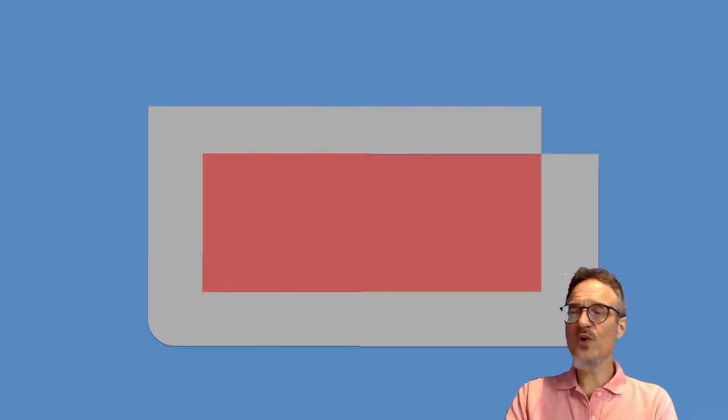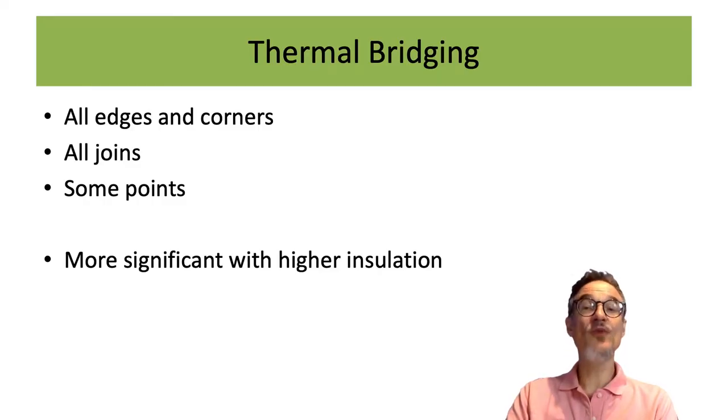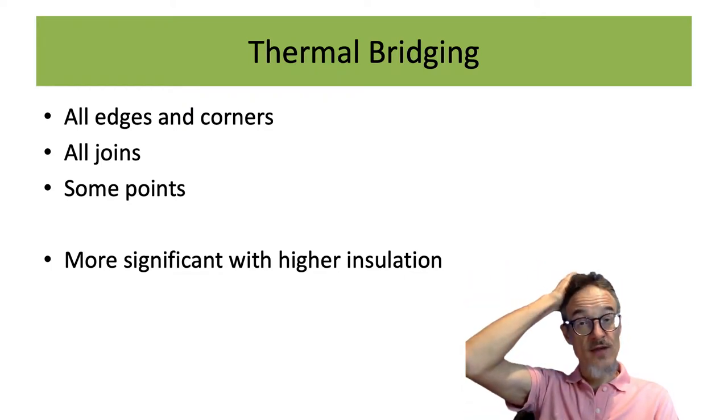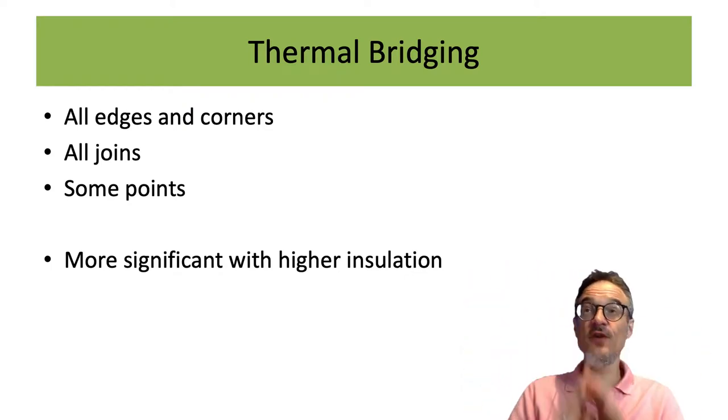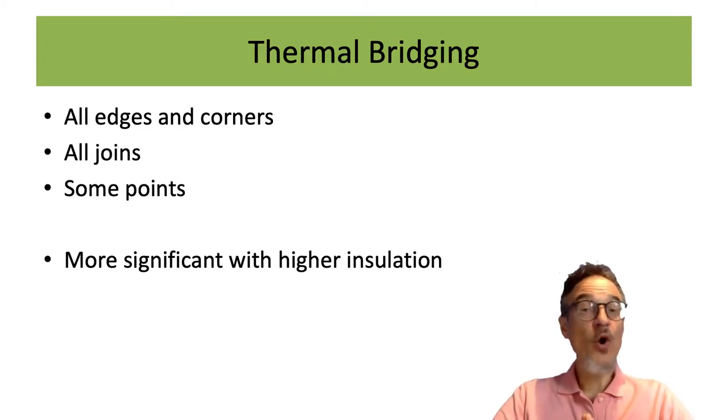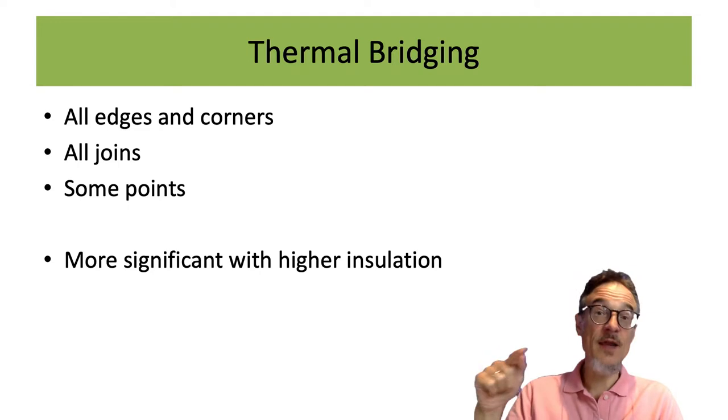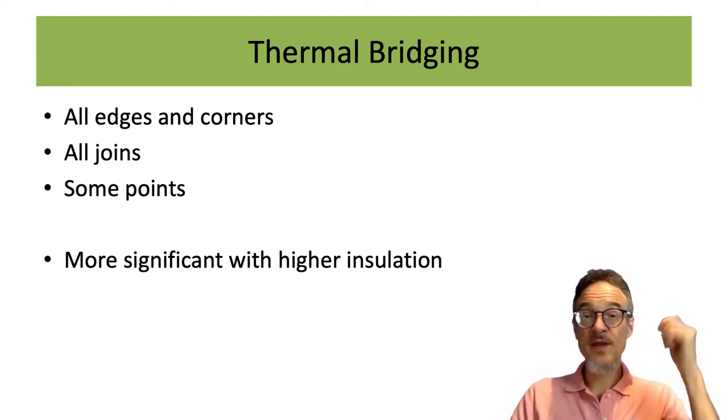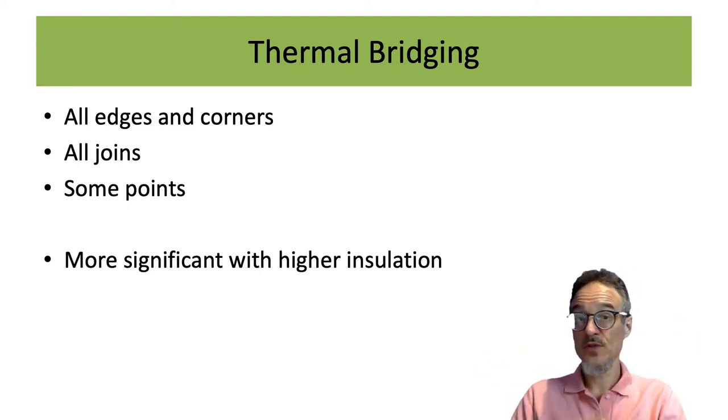And what we've been talking about is known as thermal bridging. And thermal bridging happens at all edges and corners of a building. All joins, where you have two different materials joining each other in the wall. Some points in the wall, you may get a thermal bridge. For example, if there's a pipe going through the wall or a big 12-inch nail stuck into the wall.